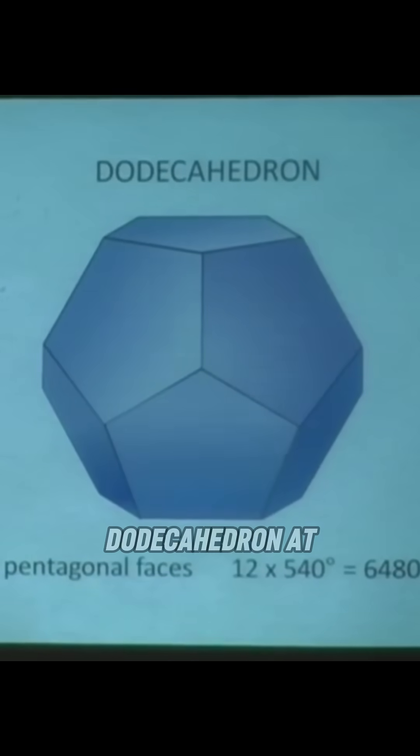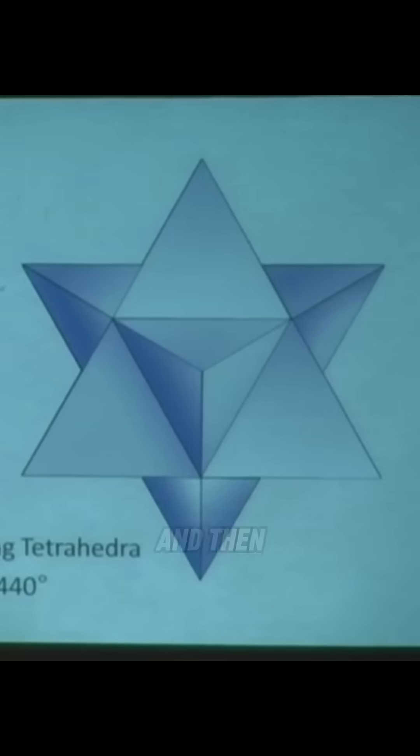And your dodecahedron at 6480, which is the length of the season of the great year. And then your two intersecting tetrahedra, which is your star tetrahedra. Again, 1440 degrees.